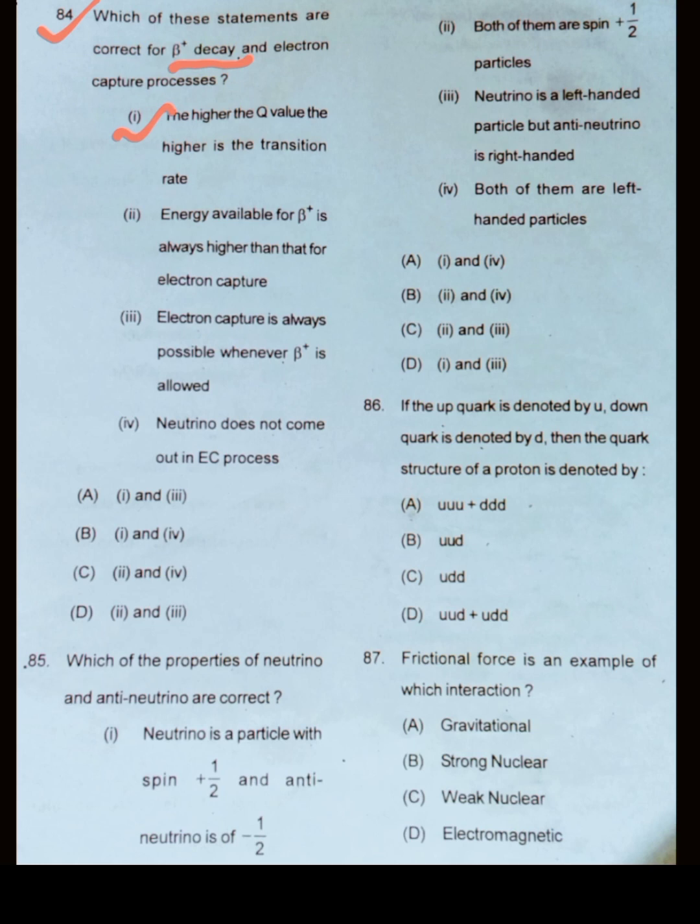The energy available for beta plus decay is always higher than that for electron capture. This may not be true. Electron capture is always possible whenever beta plus is allowed. This is true.